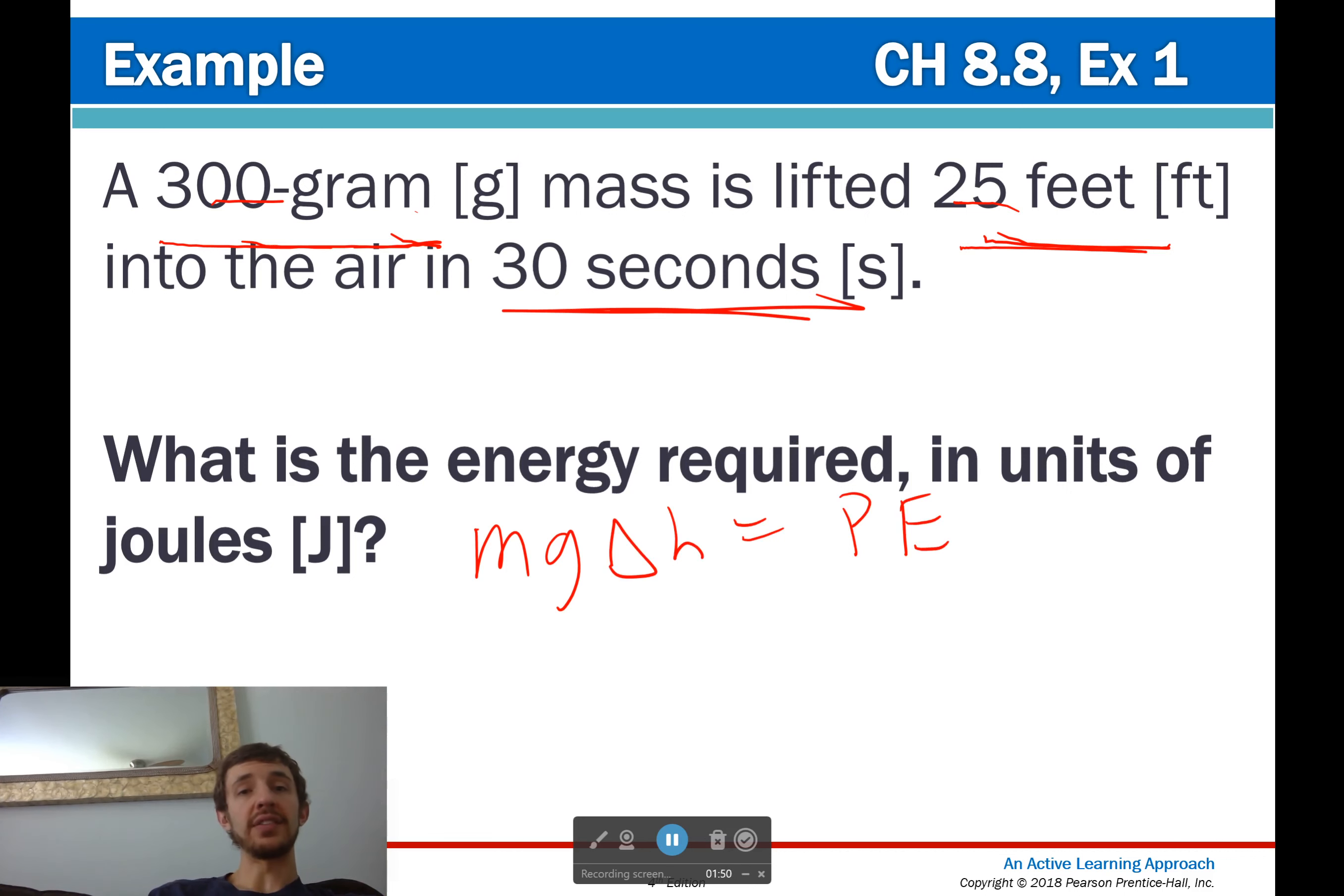Let's look at all of our things and see if we have everything we need in the right units. We don't. We never do. 300 grams, well, that needs to be in kilograms. So let's convert it. 300 grams, 1,000 grams in a kilogram. So that would be 0.3 kilograms.